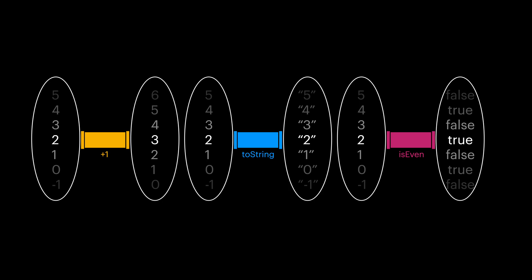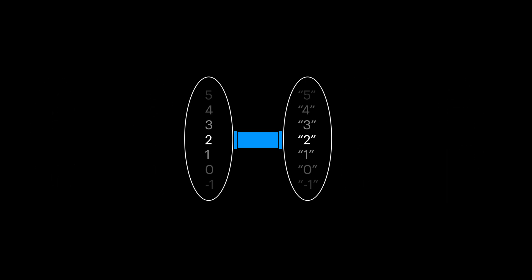If we take a closer look at the toString function, it maps each of the integer values on the left to a string on the right. A function is always defined for every single input it can receive.